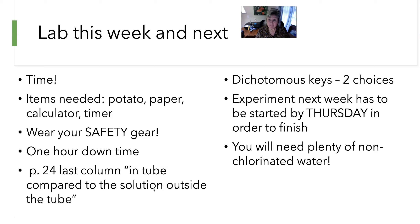For next week, here's something you need to know: you're working with germinated peas to do a respiration lab. The trick is that you have to have this started by Thursday in order to finish by Sunday night — this is really important. If you wait until Sunday night, that is too late. You cannot germinate peas in 30 minutes; it takes days and you have to do this experiment over days. Read it ahead of time: you'll soak your peas one day and get them out the next.